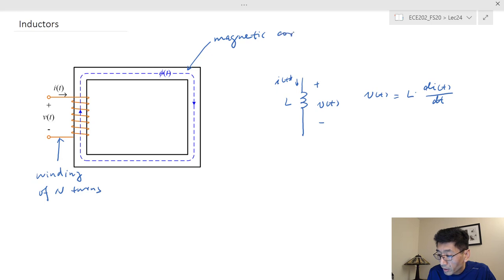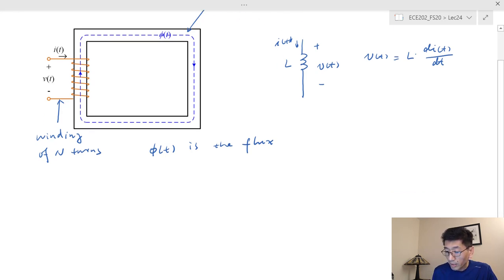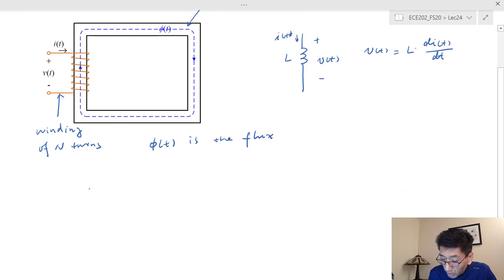The function of the magnetic core is to carry the flux phi(t). The flux is equal to phi(t), which is proportional to the number of turns and also proportional to the current, multiplied by a constant k.